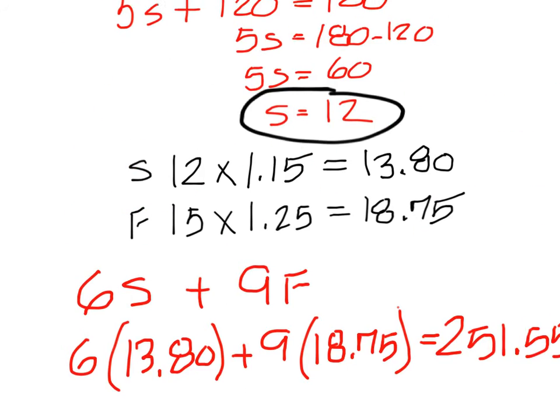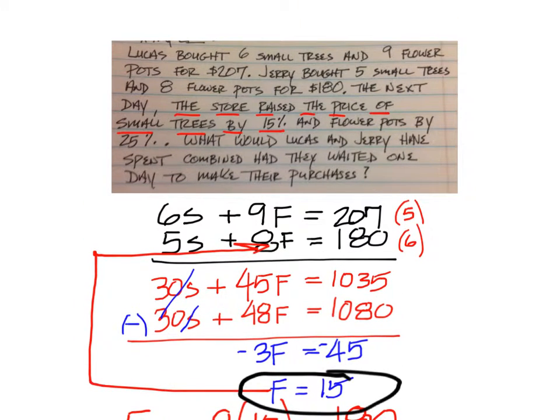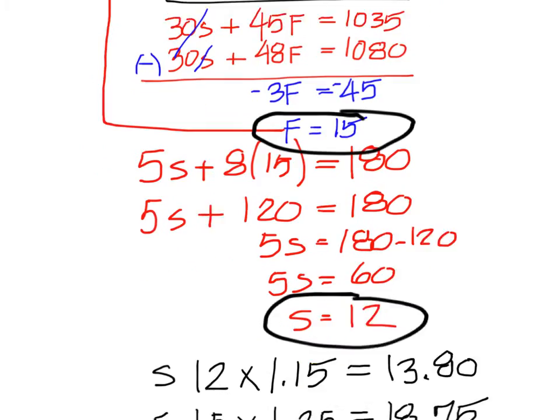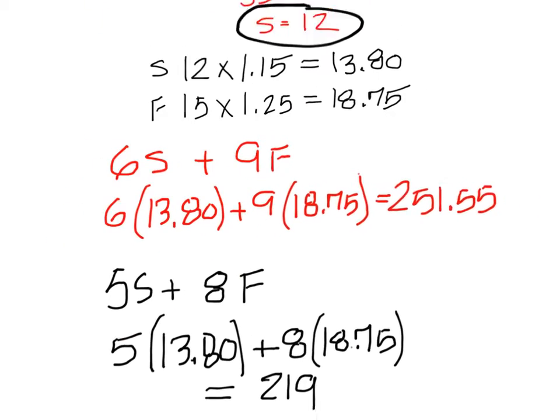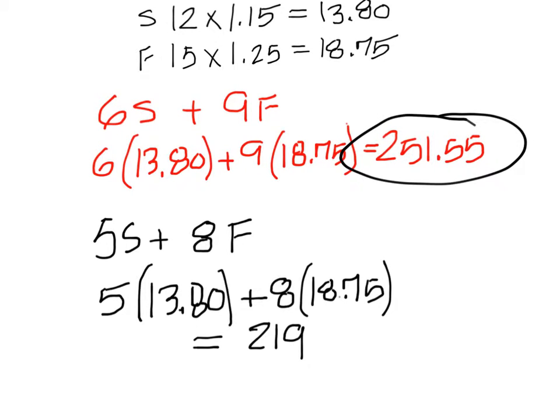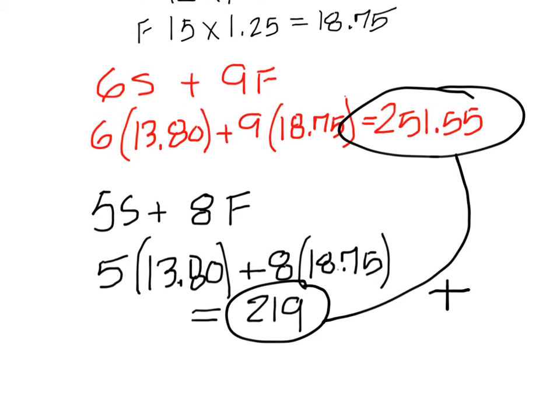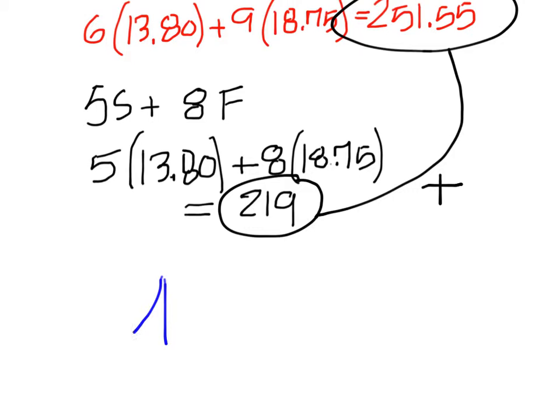Look at the final question: What would Lucas and Jerry have spent combined? So we have to add these two together. 219 plus 251.55 should come up with an answer of $470.55.